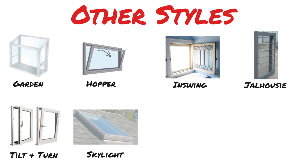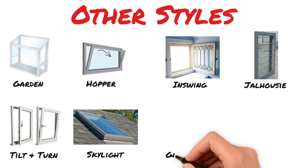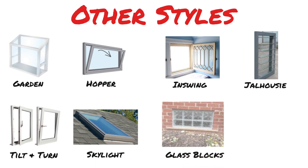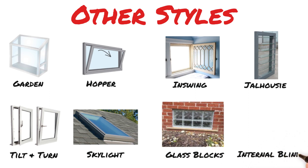A skylight is a style of window that goes on a roof, so you would need a roofer or a skylight company to help with that. Glass blocks used to be common in the 80s and are usually installed by brick masons. Windows with internal blinds are also quite a rare style because it's difficult to make efficient windows with this type of technology.